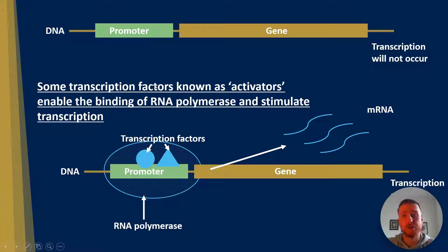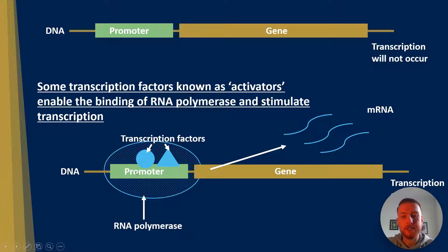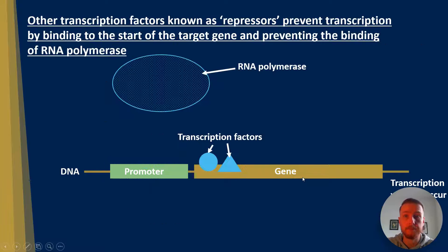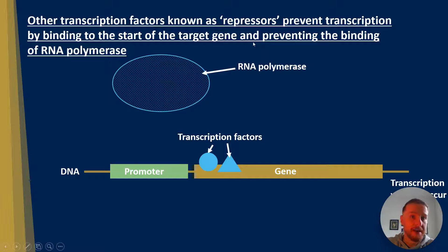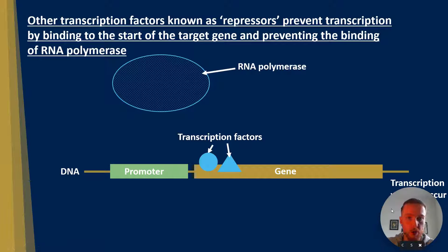Some transcription factors are known as activators and they enable the binding of RNA polymerase to stimulate transcription. That's shown in this diagram where we've got our RNA polymerase binding to the promoter because of the transcription factors, and then the RNA polymerase can go along the DNA strand and form mRNA — so transcription does occur. Other transcription factors are known as repressors, and these prevent transcription by binding to the start of the target gene and preventing the binding of RNA polymerase. Here we can see the transcription factors have bound to the start of the gene, so transcription will not occur.